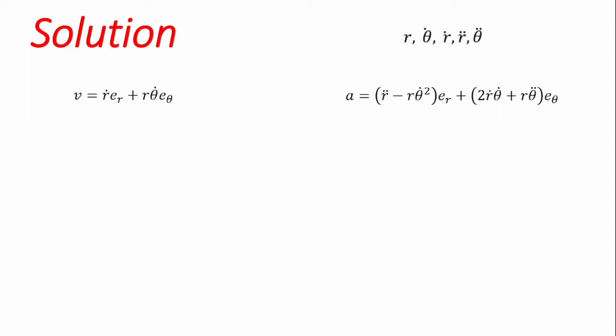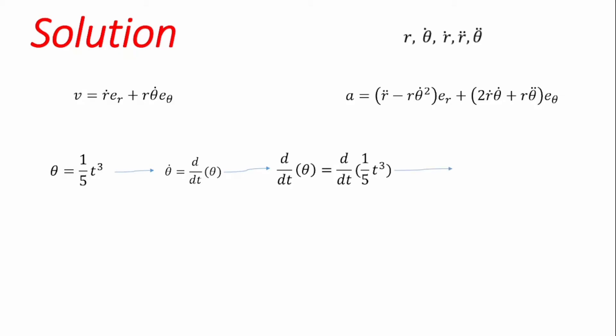We already have an equation for r based on what was given. The next item to estimate is θ̇, which is the time derivative of theta, d/dt of θ. Since θ = (1/5)t³, if we differentiate with respect to time, we get θ̇ = (3/5)t².